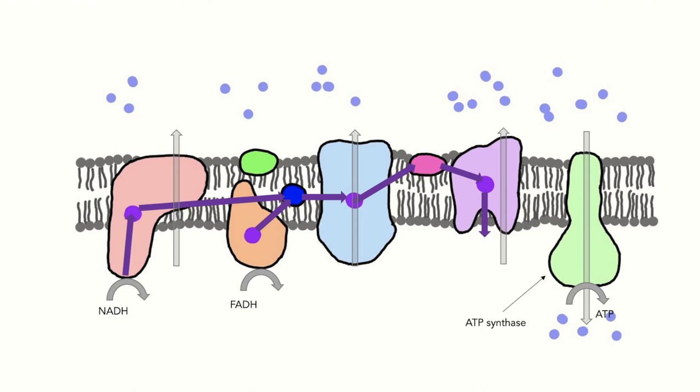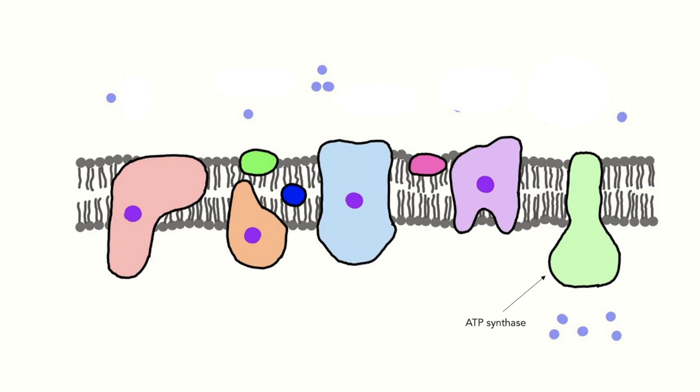However, if not enough protons are in the intermembrane space, for example because the Krebs cycle is not sufficiently working, such as in cancer cells, ATP synthase can actually work in reverse, hydrolyzing ATP to generate a proton gradient in the intermembrane space. For cancer cells, this would mean that all the beautiful ATP produced by glycolysis is just hydrolyzed for useless mechanisms.